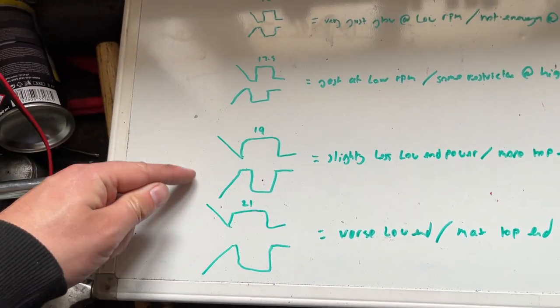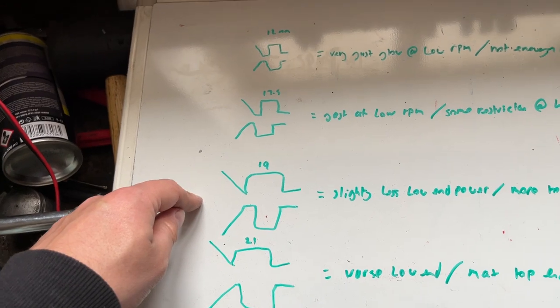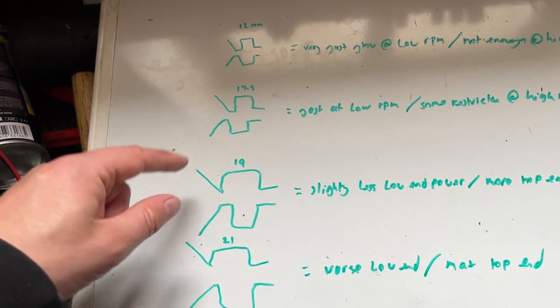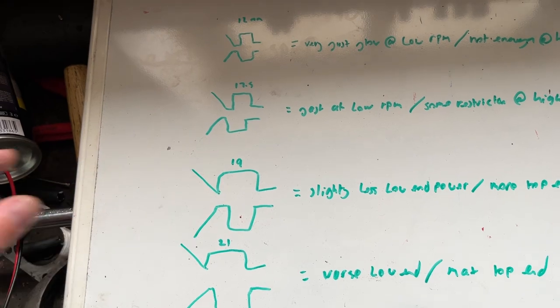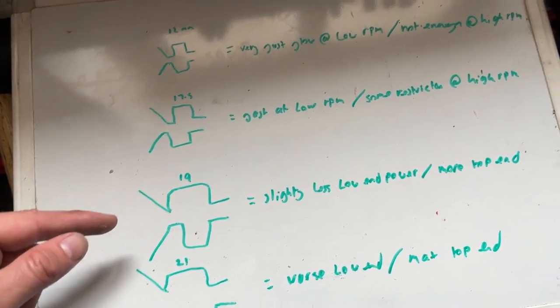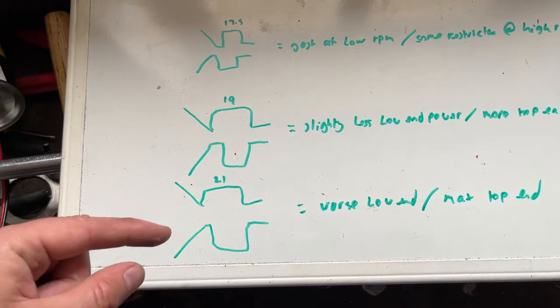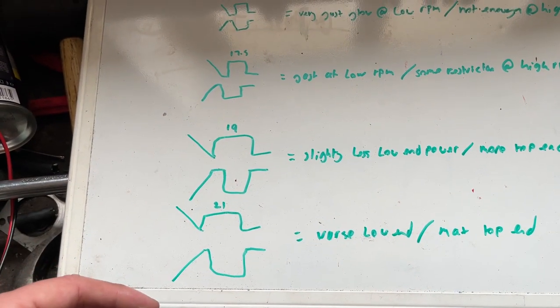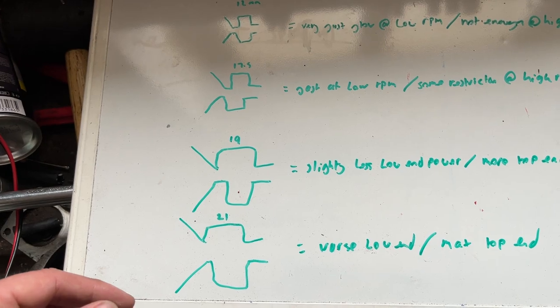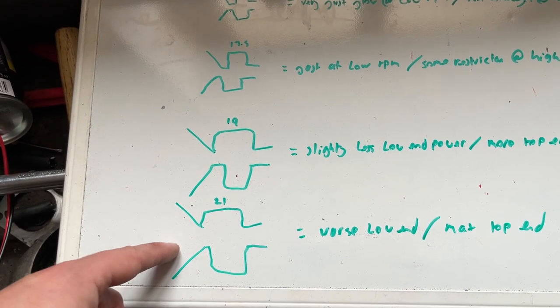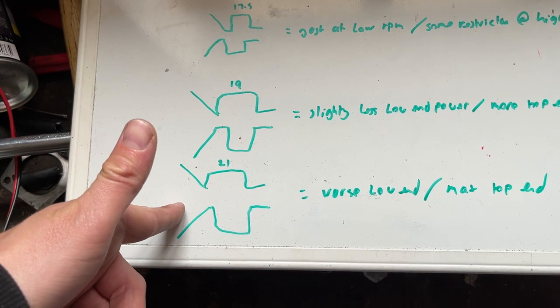We've then got the 19mm which is probably one of the most common larger carburetors that will be fitted to a 70cc big bore kit or sometimes even a 50cc cylinder. And then we've got a 21mm which is the biggest, or I know some people go bigger, but really that's the biggest I would say would be sensible.